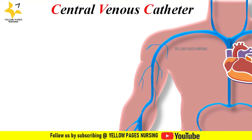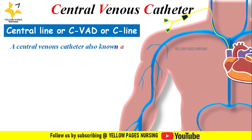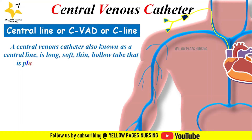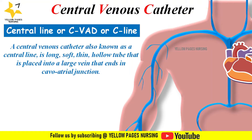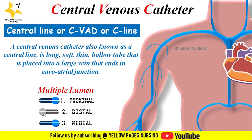A central venous catheter, also known as a central line or CVAD or C-line, is a long, soft, thin, hollow tube that is placed into a large vein that ends in the cavo-atrial junction — the junction of the superior vena cava and the right atrium. A central line has multiple lumens that may be double or triple, named as proximal, distal, and medial.